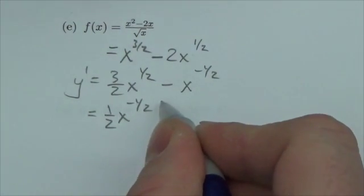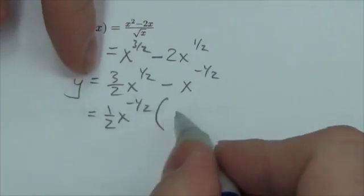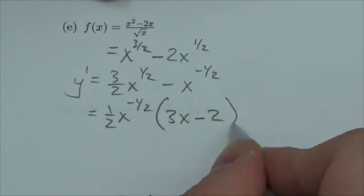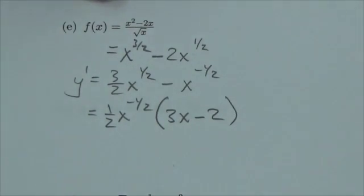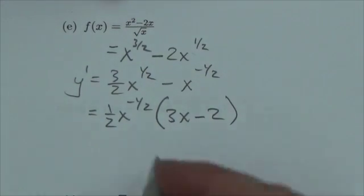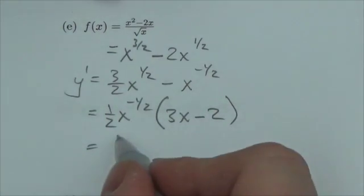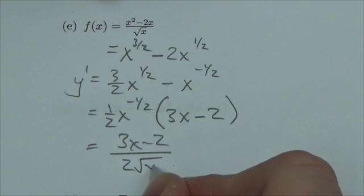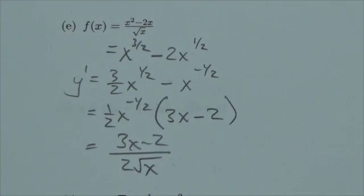And that will leave me with 3x, well 3x minus 2. And that honestly looks about like that's about as nice as it'll get. Now again, I can write this as 3x minus 2 over 2 root x if you want it to look like that, but I don't think that's really all that necessary.